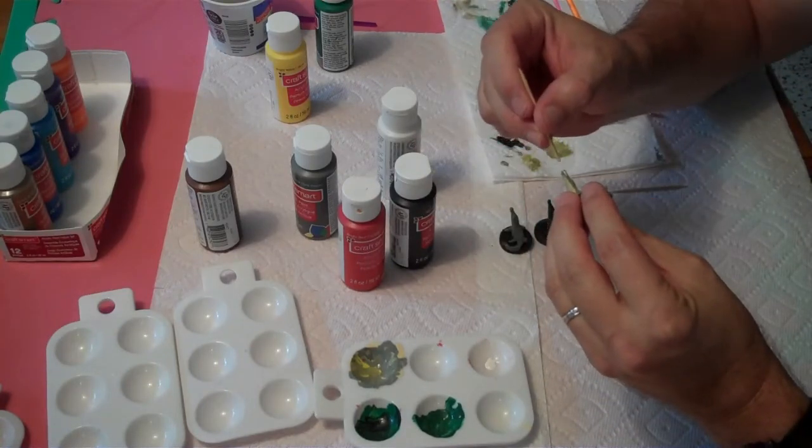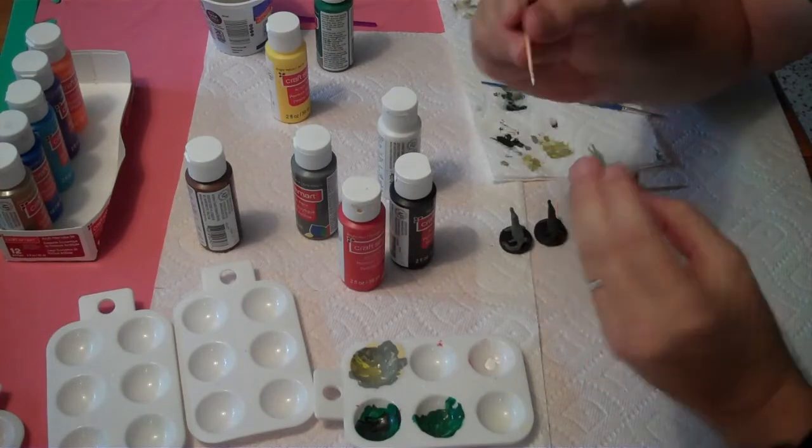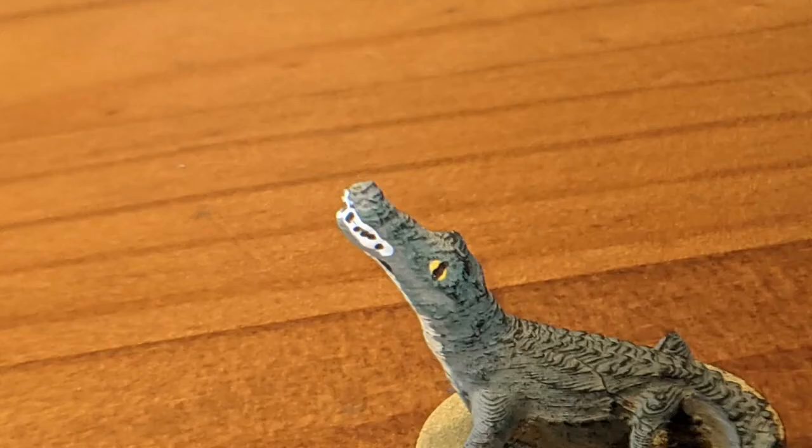Specifically, I'm using white along the mouth area to suggest teeth. Later, I put some black dots in the white area to give the impression of separate teeth.